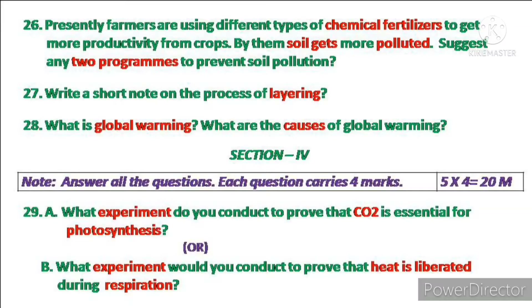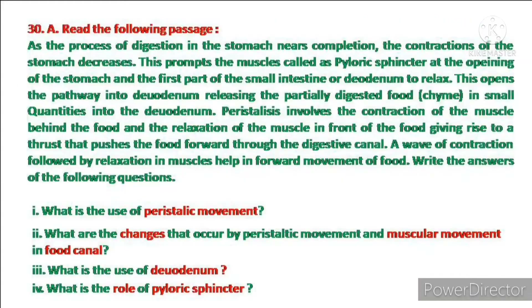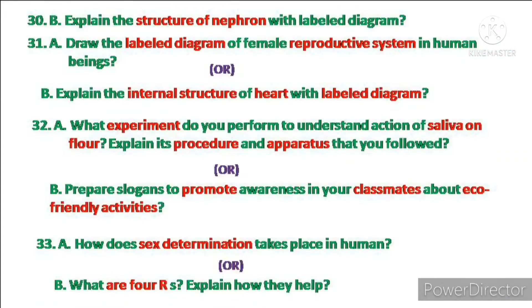Coming to Section 4: long answer type questions are present. Totally 5 questions are there. Each question carries 4 marks, and each question has an internal choice — you have to write either A or B. Choose any question and answer it. 20 marks are allotted for this section.